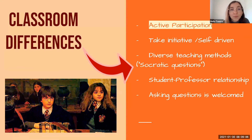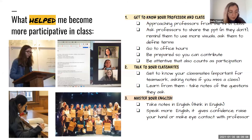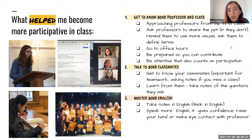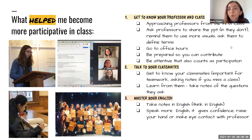What helped me become more participative in class: definitely get to know your professors and classmates from the beginning. I approach every new professor after class — 'Hi professor, I'd like to know your expectations or something I should take into consideration.' Letting the professor know you is very helpful, especially if you're shy. Also ask them to share their slides. For me, seeing words I hadn't understood and taking notes was very helpful.